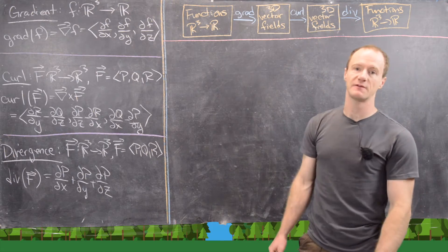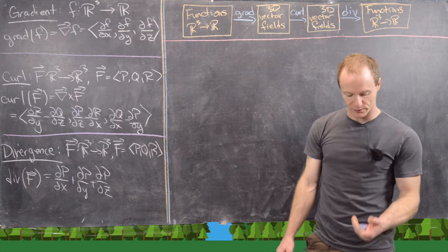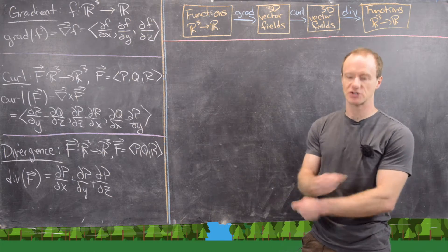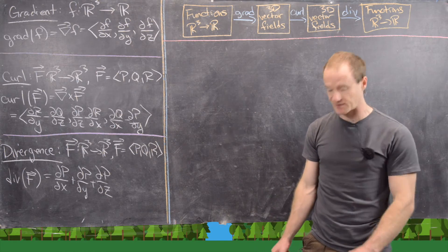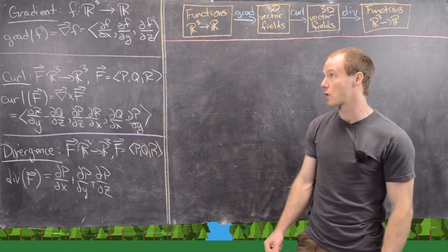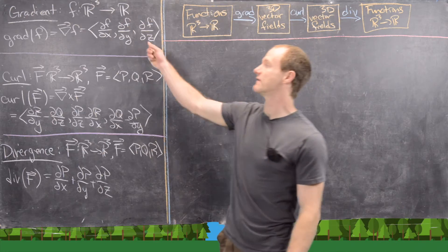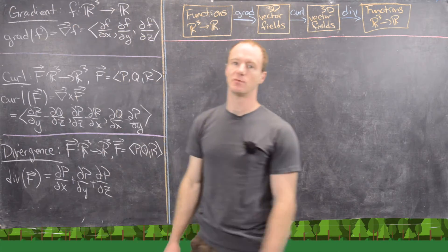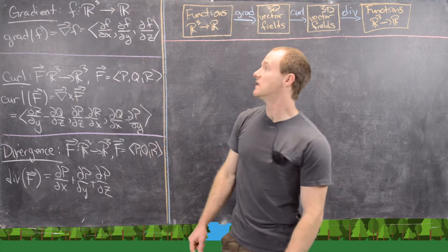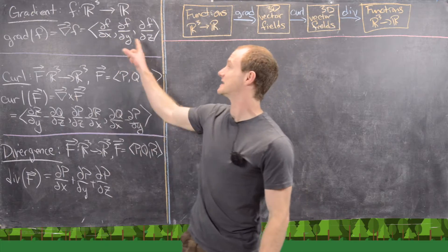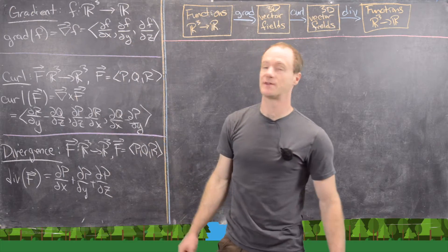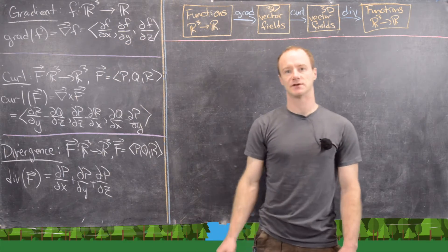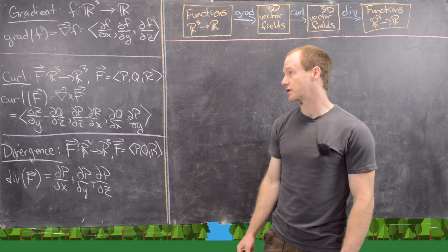Here we have three operations that can happen on multivariable functions or vector fields as appropriate. We have the gradient, and given a multivariable function, the gradient is a vector field made up of partial derivatives of that multivariable function.